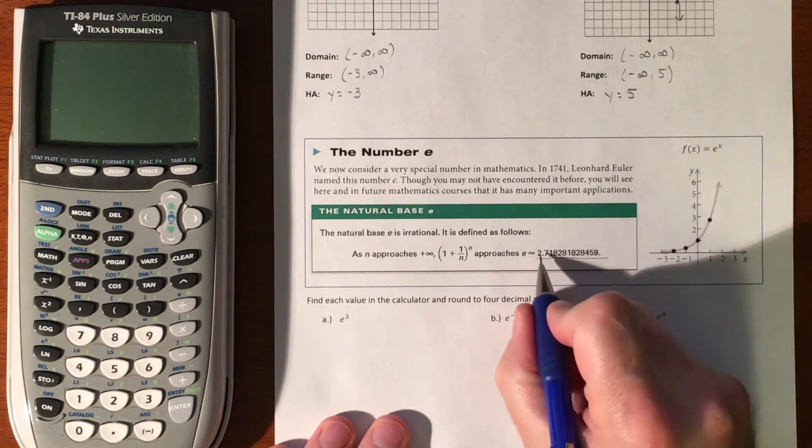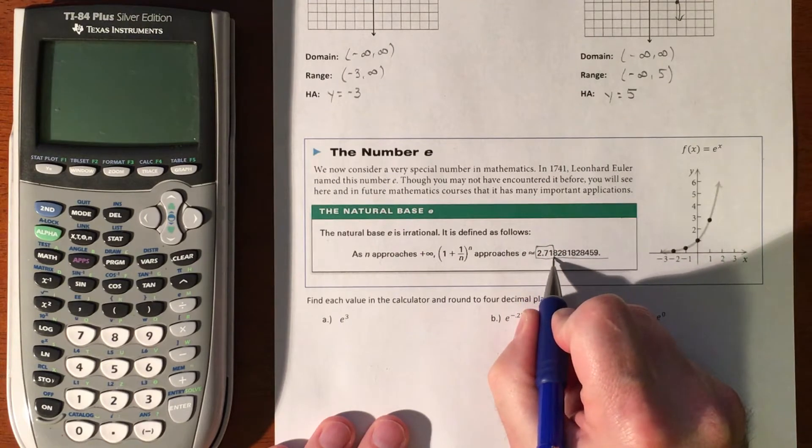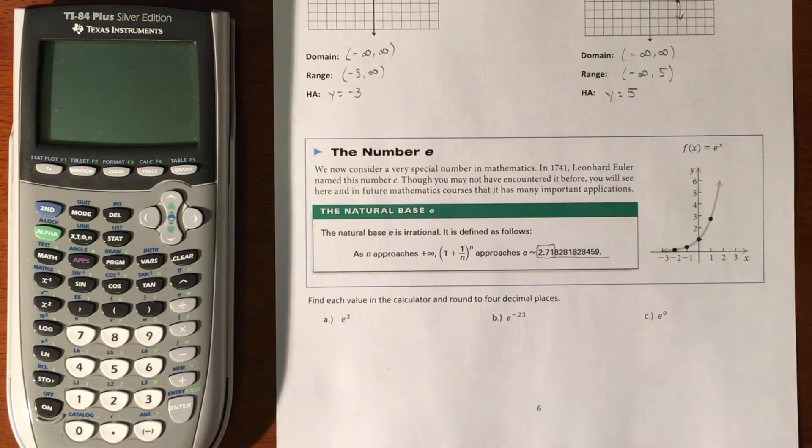And so we really kind of think of it as like pi is 3.14. E is 2.71. On and on and on and on. 2.72, I suppose, if you round it.